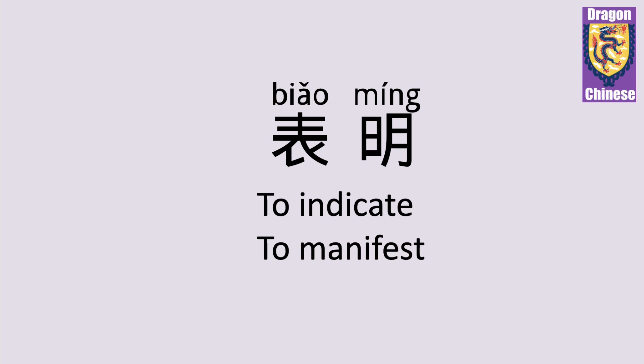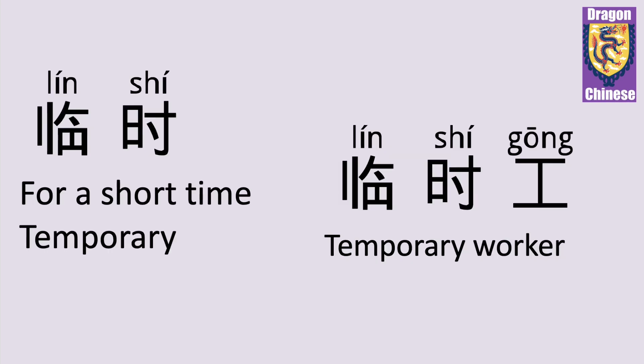表明 — to indicate, to manifest. 临时 — for a short time; temporary. For example: 临时工 — temporary worker.